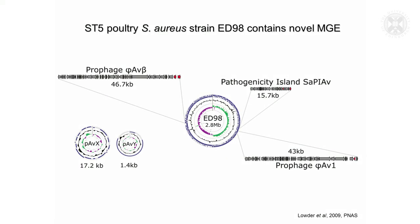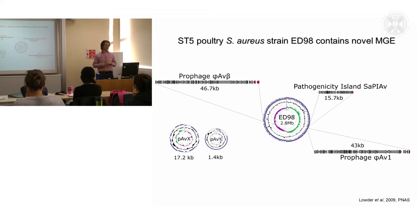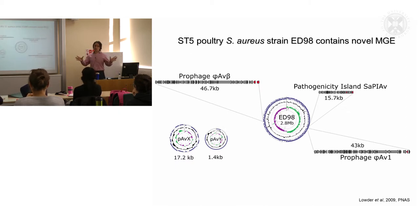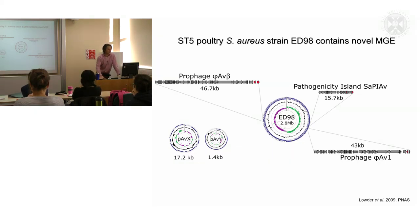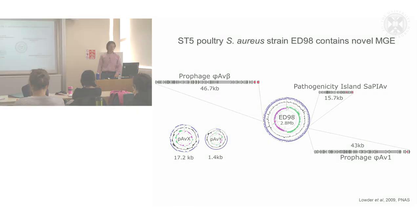When we look at the genome sequence of one of these poultry strains, we find it has a unique set of coding sequences that are potentially mobile, suggesting it has acquired these mobile genetic elements since the host jump event occurred. These mobile genetic elements are probably very important for the adaptation of this strain to poultry. When we look at other poultry strains of Staph aureus — including other ST5s but also the other major clonal complex CC385 — we find they share many of these mobile genetic elements, indicating convergent or parallel evolution in acquiring them, which presumably contributes to their ability to colonize and spread in poultry populations.